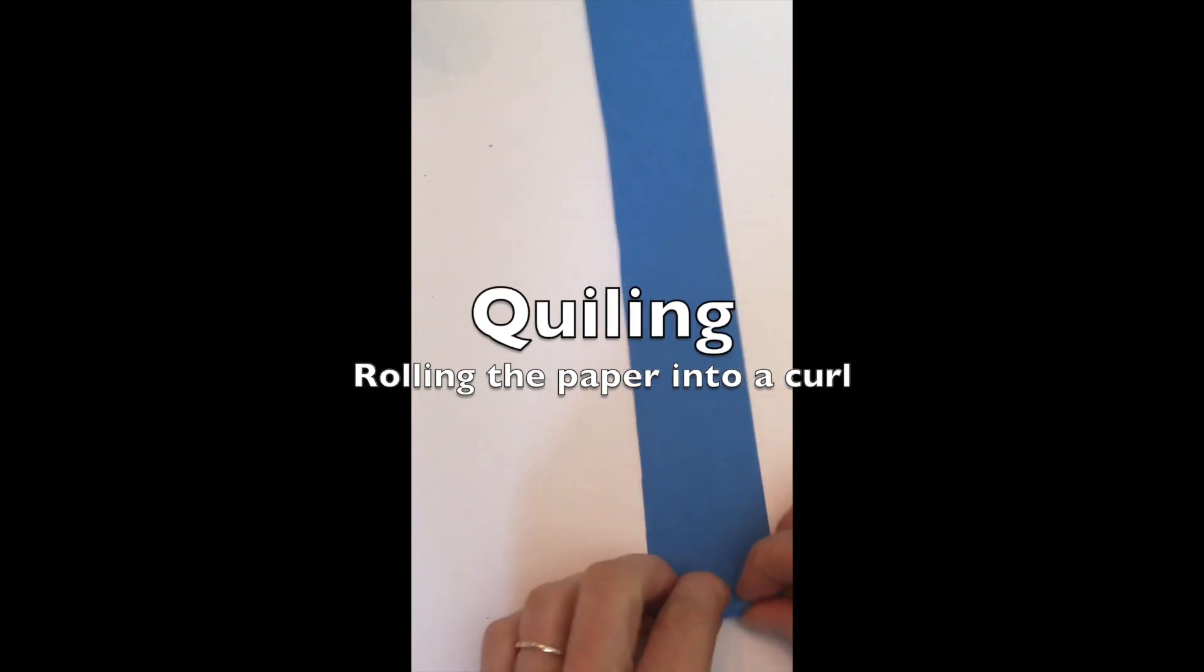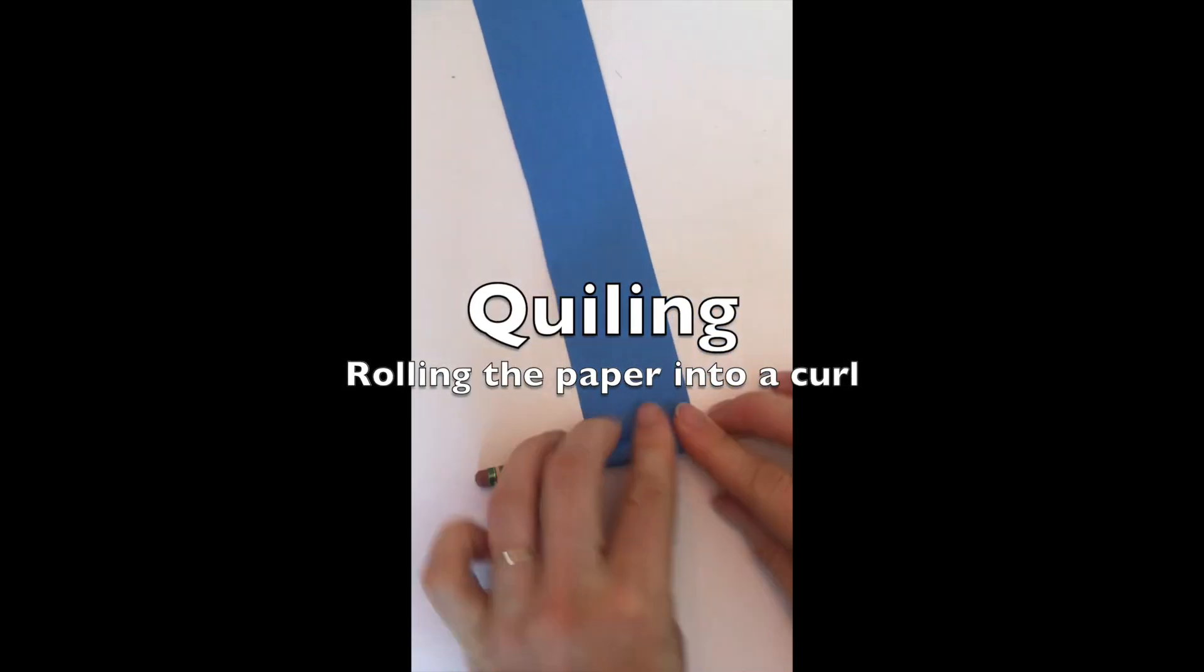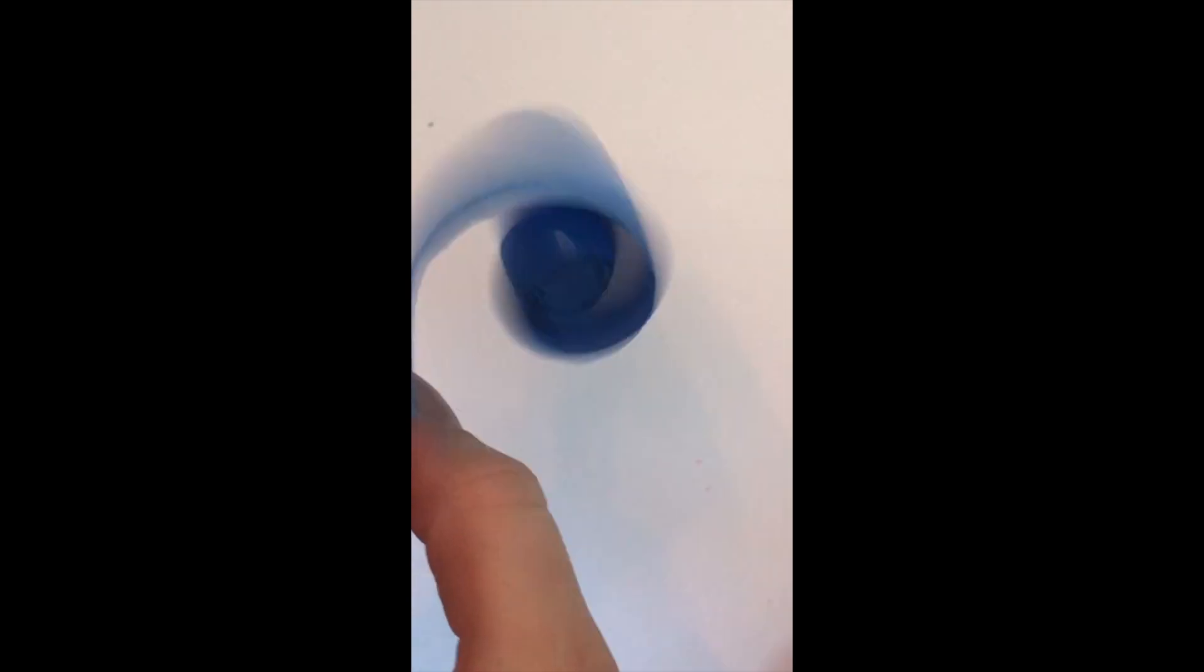Paper quilling means rolling your paper into a curl. Use a tool, like a pencil, to roll your paper up with. Hold on to the paper as you roll.